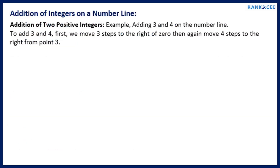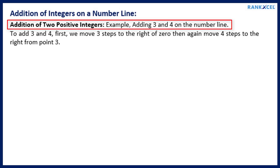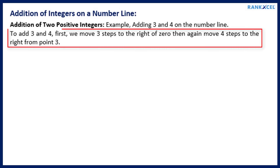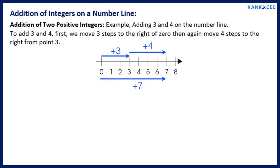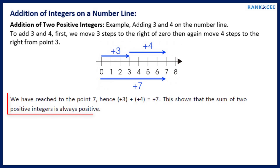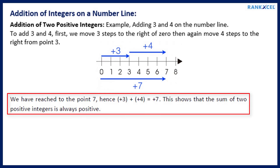Addition of integers on a number line — adding 2 positive integers. Example: Adding 3 and 4 on the number line. First we move 3 steps to the right of 0, then again move 4 steps to the right. We have reached point 7. Hence plus 3 plus plus 4 equals plus 7. This shows that the sum of 2 positive integers is always positive.